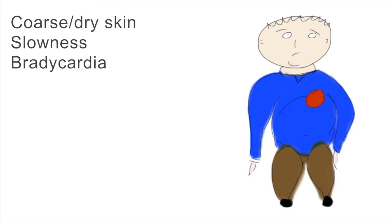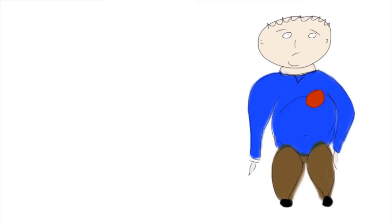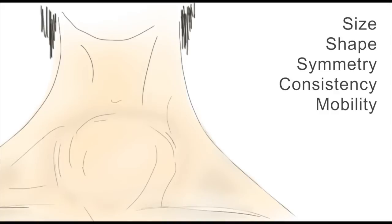Once you've assessed the patient's thyroid status and determined whether he or she is hypothyroid, euthyroid or hyperthyroid, examine the goiter. This is the same as when you examine any lump. So assess the size, shape, symmetry, consistency and mobility.